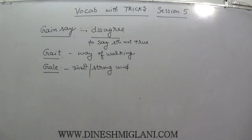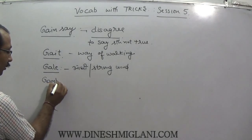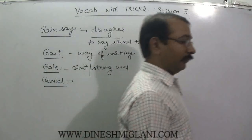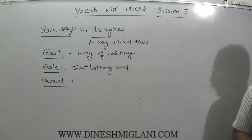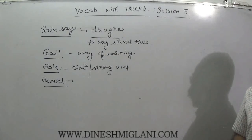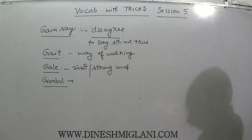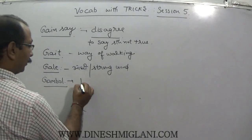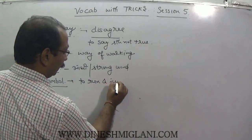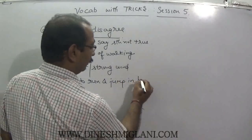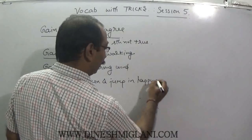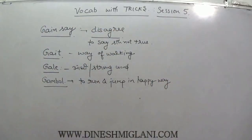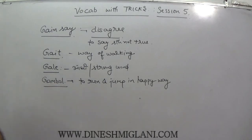Next word is gambol, G-A-M-B-O-L. When we talk about gambol — imagine you play gamble and you win. After winning, you become so happy. Gambol means to run and jump in a happy and delightful way. When you get a very good benefit, you become very happy and you dance around. So gambol means to run and jump in a delightful, happy way.